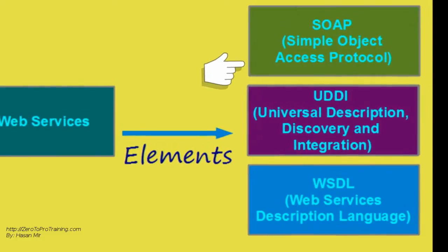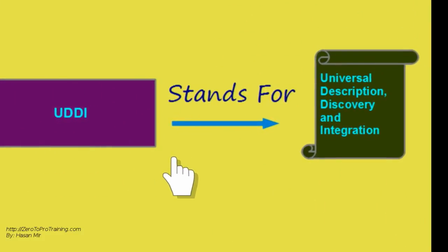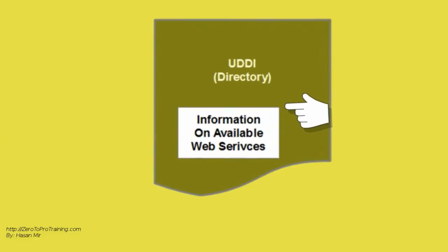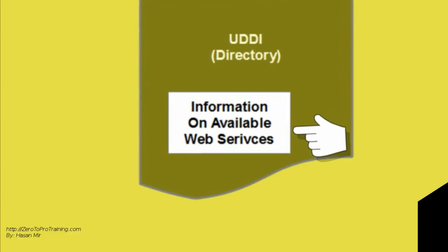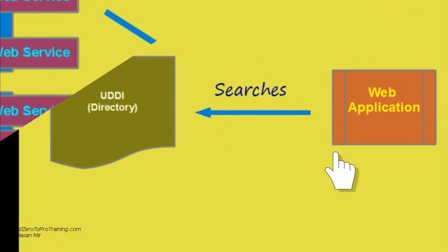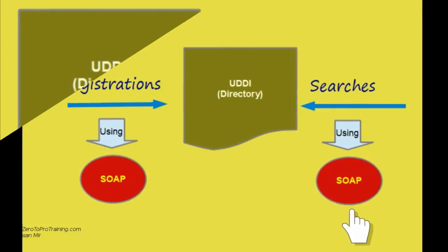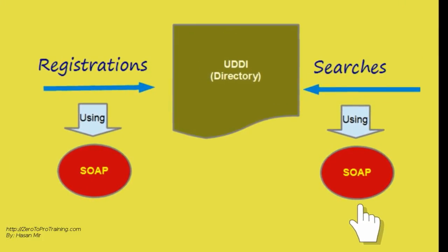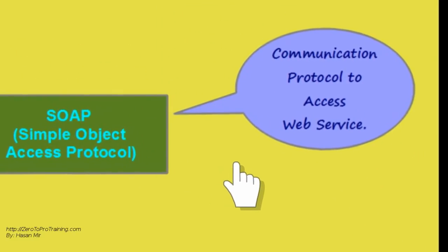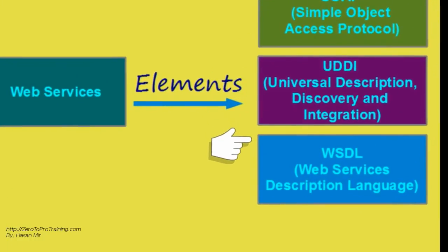Now let's talk about Universal Description, Discovery and Integration, or UDDI. UDDI stands for Universal Description, Discovery and Integration. UDDI is a directory for storing information about web services. Service providers register themselves in the directory. Service consumers search the directory to look for providers. Communication with UDDI takes place using SOAP, very similar to how two applications would talk with each other. In short, UDDI is a directory used to locate available web services.